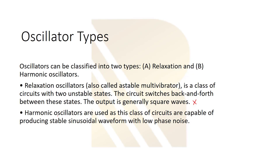We generally use harmonic oscillators in RF. This class of circuits is capable of producing a stable sinusoidal waveform with low phase noise. We will explain phase noise in upcoming topics in detail. What we want from our oscillator is we want to have a frequency and we want this frequency to be stable.